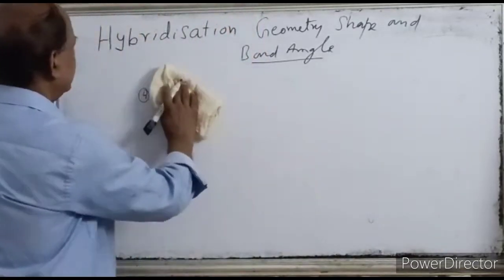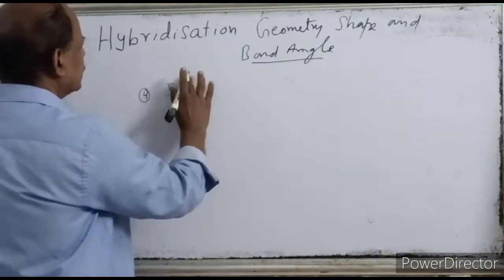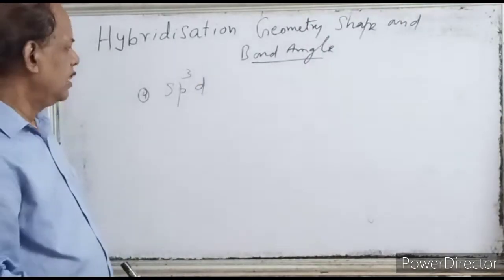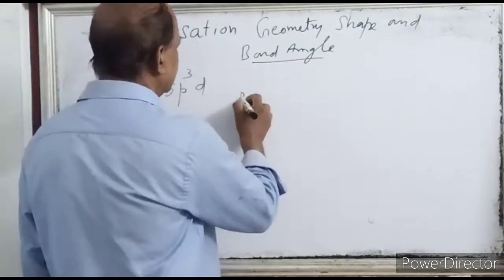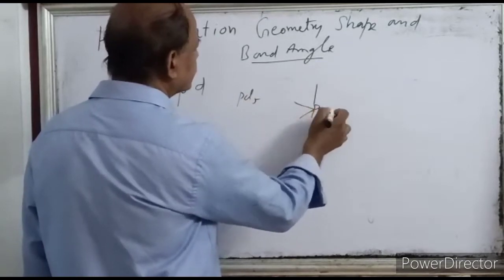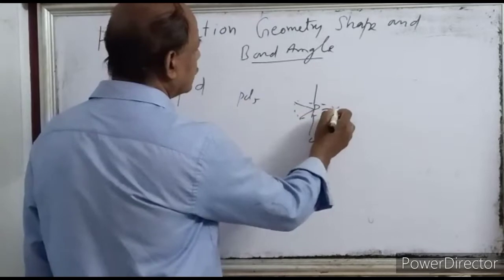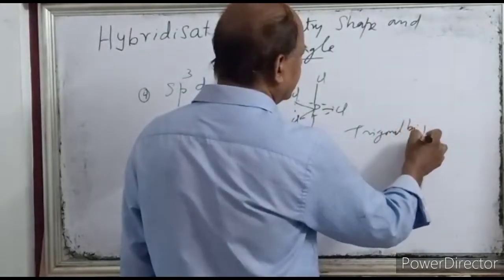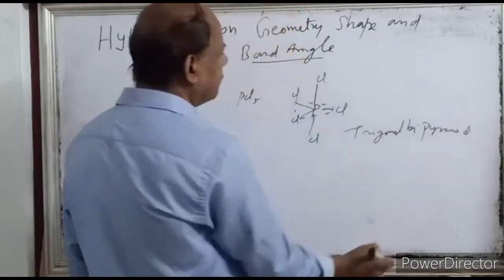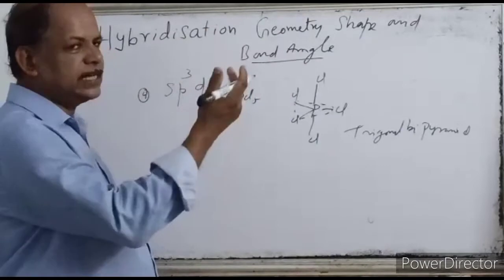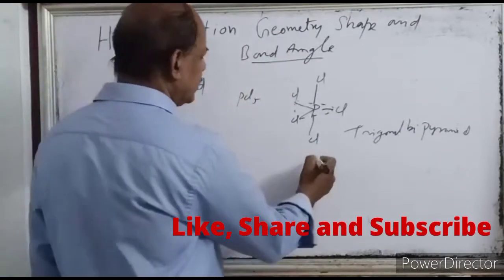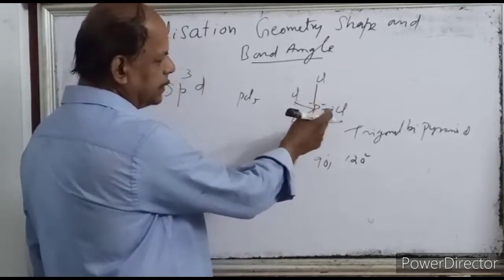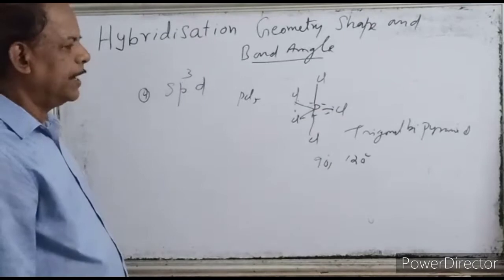The next is SP³D hybridization. In SP³D hybridization there are 5 orbitals and the shape of the molecule is trigonal bipyramidal. An example is PCl₅. The axial bond angle is 90° and the equatorial bond angle is 120°. The shape is trigonal bipyramidal.